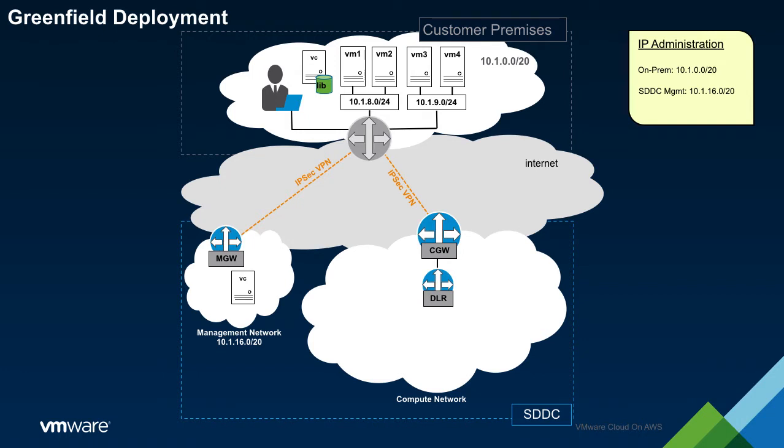For the first step of a greenfield deployment, an IP range should be allocated for use by the compute network of the SDDC. Here, we will allocate a slash-20 network.